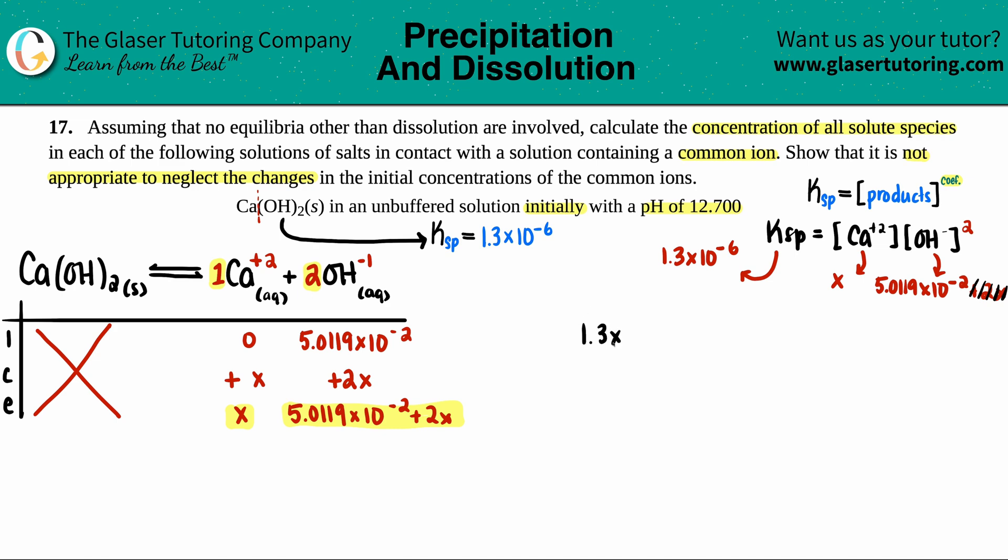It would be set up like this. 1.3 times 10 to the negative six equals X times the 5.0119 times 10 to the negative second, and that is squared. Since they're already setting us up to say that it's not appropriate, I'm just going to quickly solve for X. First we'll square that number and then we'll divide. 5.0119 times 10 to the negative second squared. And then 1.3 times 10 to the negative six divided by that number. So we get roughly 5.175 times 10 to the negative fourth.